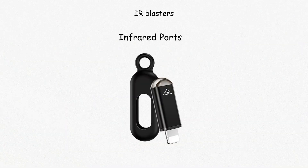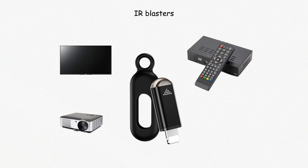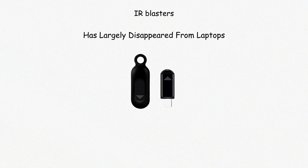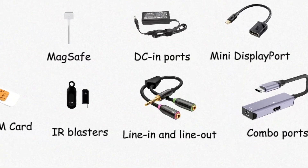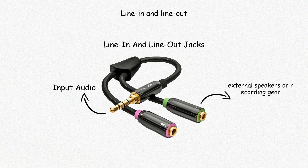IR blasters, or infrared ports, were once found on laptops and phones for remote control functions. They emit infrared signals used to control TVs, set-top boxes, or projectors. IR has largely disappeared from laptops but still exists in some smartphones or specialized control devices. Line-in and line-out jacks are separate from standard headphone or mic jacks. Line-in is used to input audio from another device such as a mixer, amplifier, or media player. Line-out sends audio to external speakers or recording gear. These jacks are common on desktops or professional audio equipment and use the same 3.5 millimeter connectors but are optimized for higher fidelity signal handling.